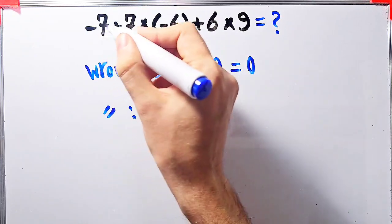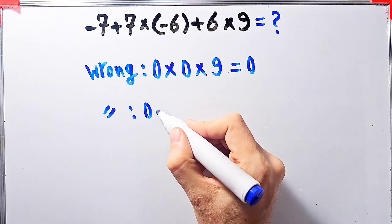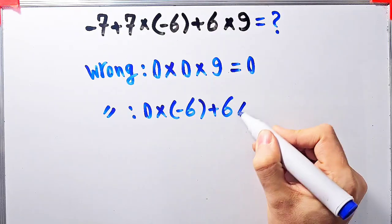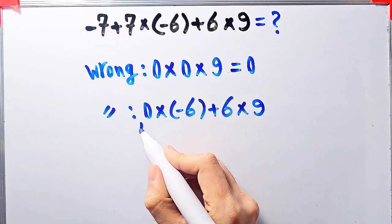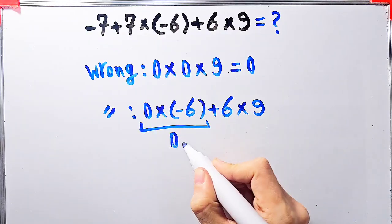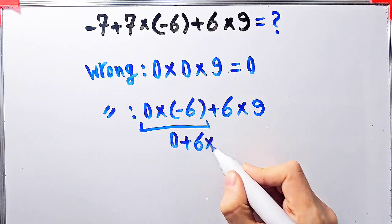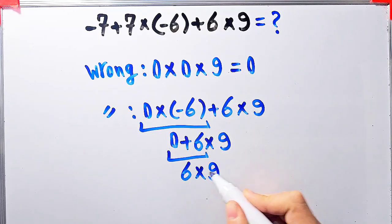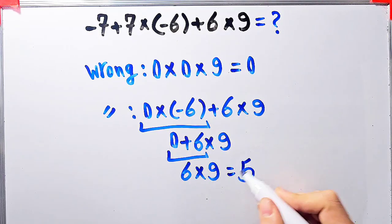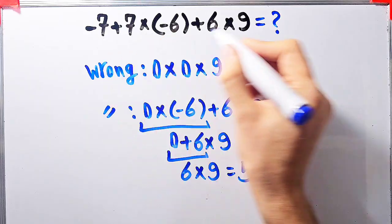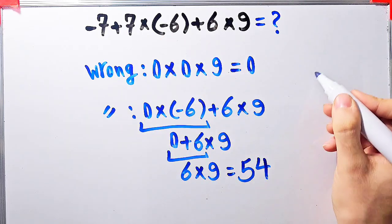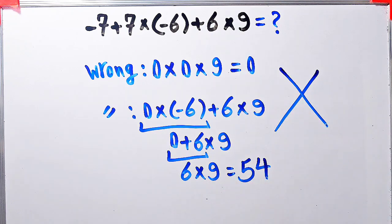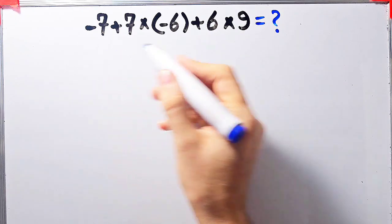Some others solve it like this: negative 7 plus 7 equals 0, then 0 times negative 6 plus 6, then times 9. They get 0 plus 6 equals 6, and 6 times 9 equals 54. They say the final answer equals 54, but this answer is definitely wrong.